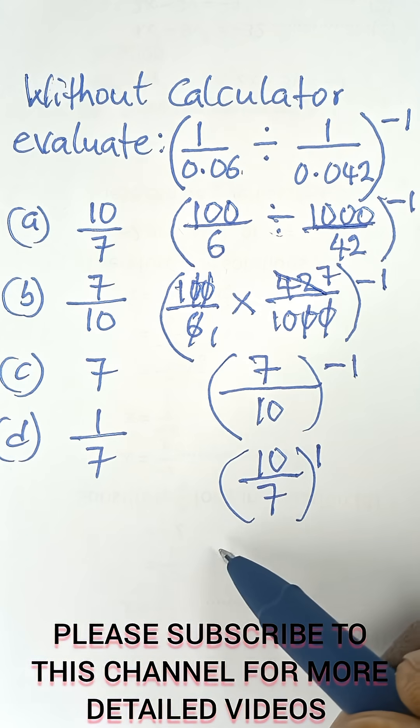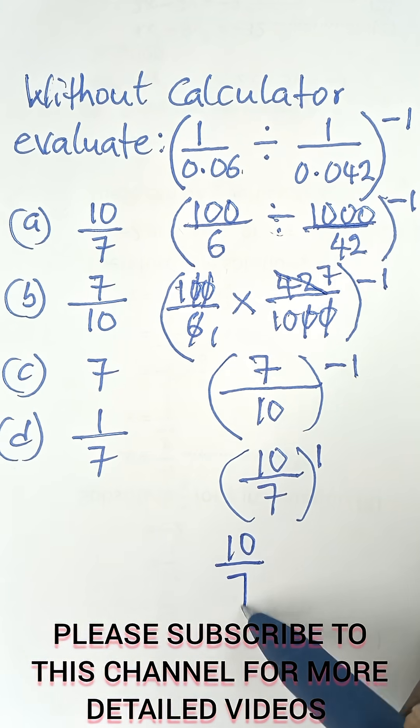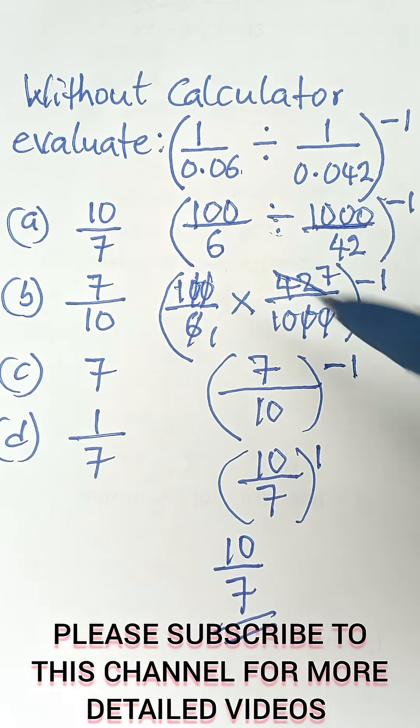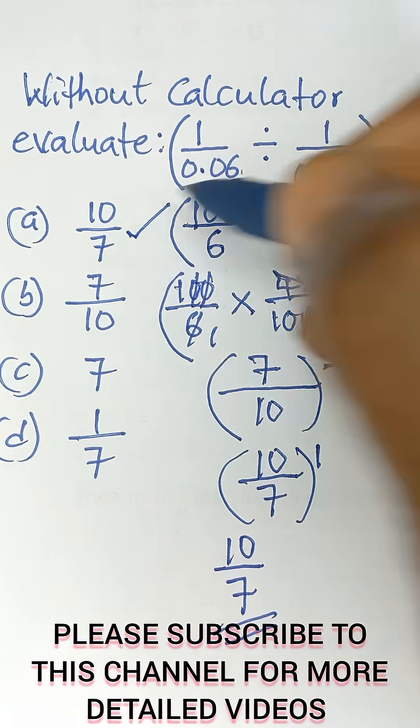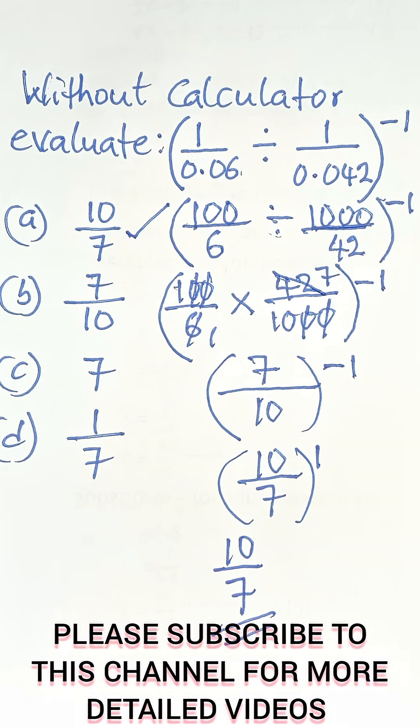So finally, therefore the answer is 10 over 7. Because 10 over 7 raised to the power of 1 remains 10 over 7 as our final answer. And that is option A. So please subscribe to this channel so that I can get more videos like this. Thank you.